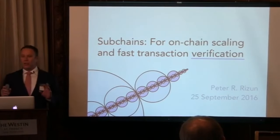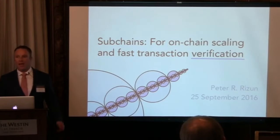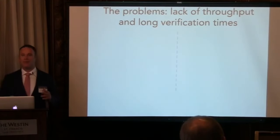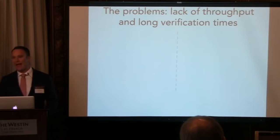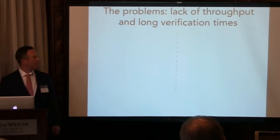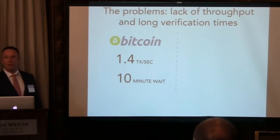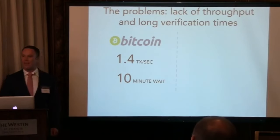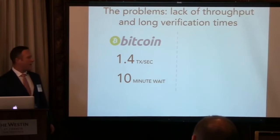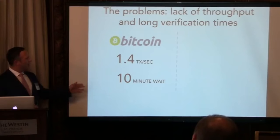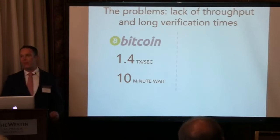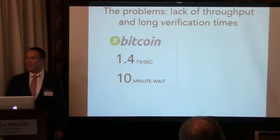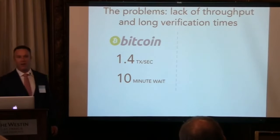First I wanted to discuss the motivation behind this project. The motivation is simply that right now Bitcoin has a disparity. Looking at some key performance statistics, we see that the Bitcoin network processes on average 1.4 transactions per second last year. On average, users and merchants needed about 10 minutes to receive initial verification from a miner that a transaction is likely to be in the current blockchain.